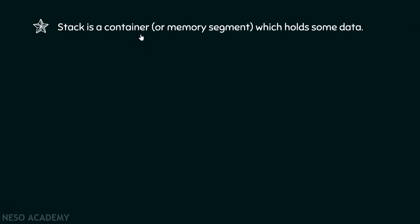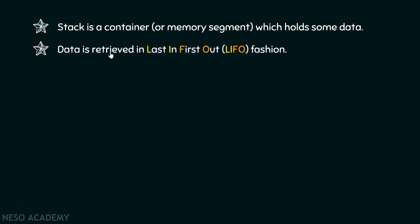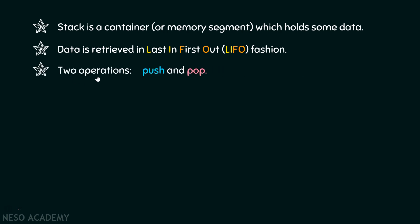In computer science, a stack is a container or a memory segment which holds some data. Data is retrieved in last-in, first-out fashion — the element placed last will come out first. There are two operations we can perform on a stack: push, which means placing an element on the stack, and pop, which means retrieving the element out of the stack.